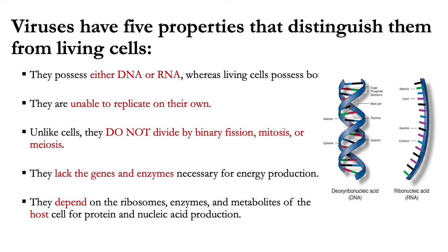Viruses have five specific properties that distinguish them from living cells. First, the vast majority of viruses possess either DNA or RNA, unlike living cells which possess both. Second, they are unable to replicate or multiply on their own — their replication is directed by the viral nucleic acid once introduced into the host cell. Third, unlike cells, they do not divide by binary fission, mitosis, or meiosis. Fourth, they lack the genes and enzymes necessary for energy production. And fifth, they depend on the ribosomes, enzymes, and metabolites of the host cell for protein and nucleic acid production.